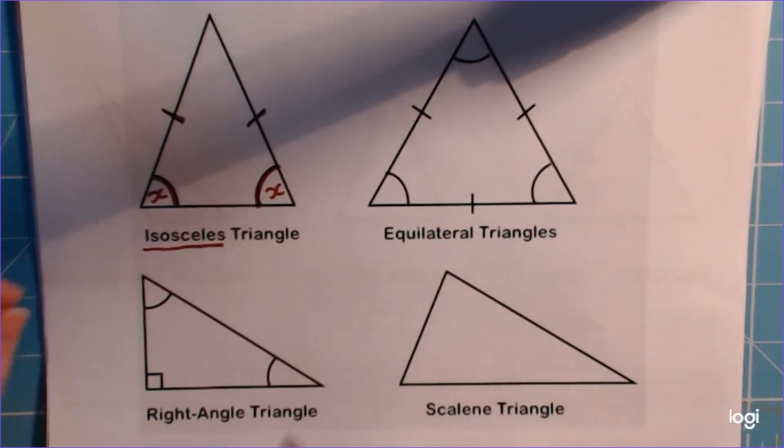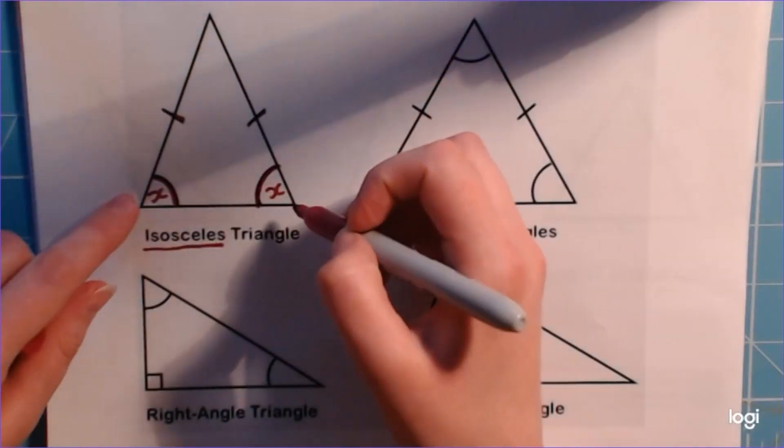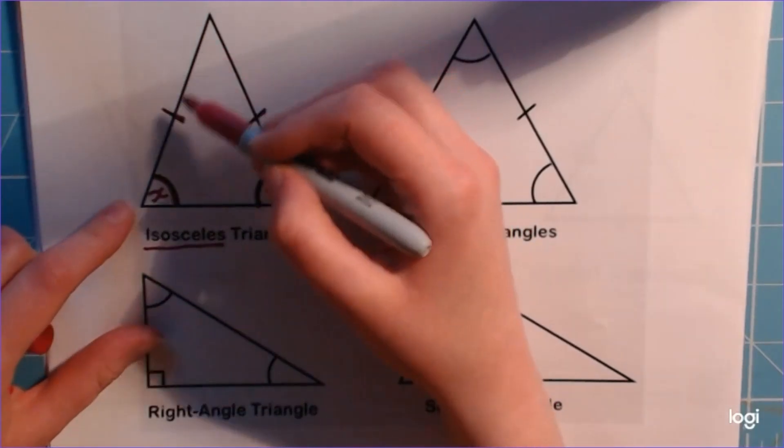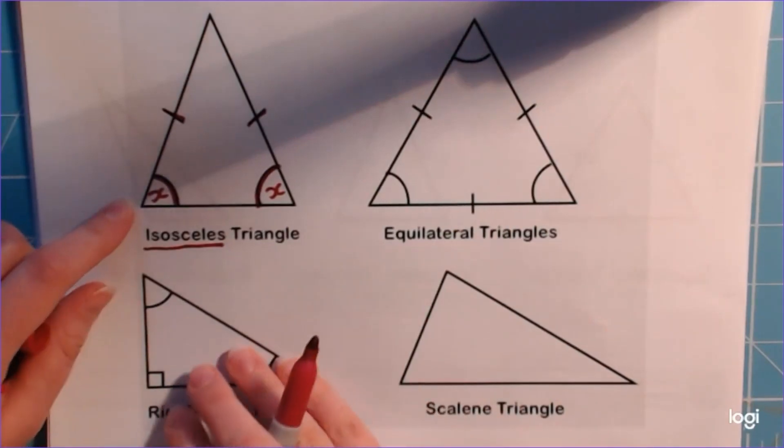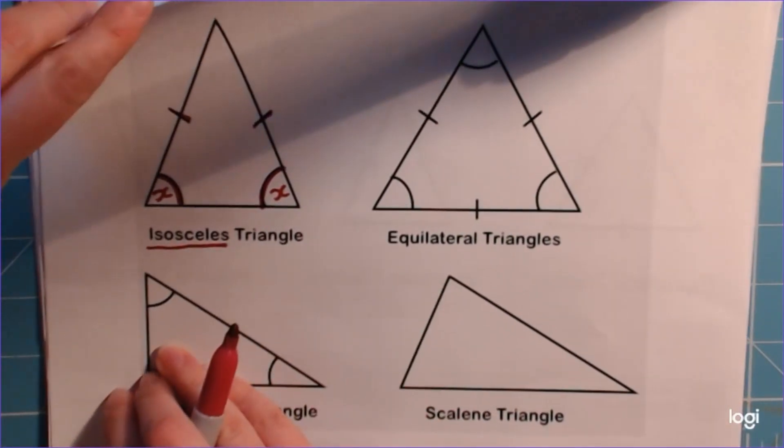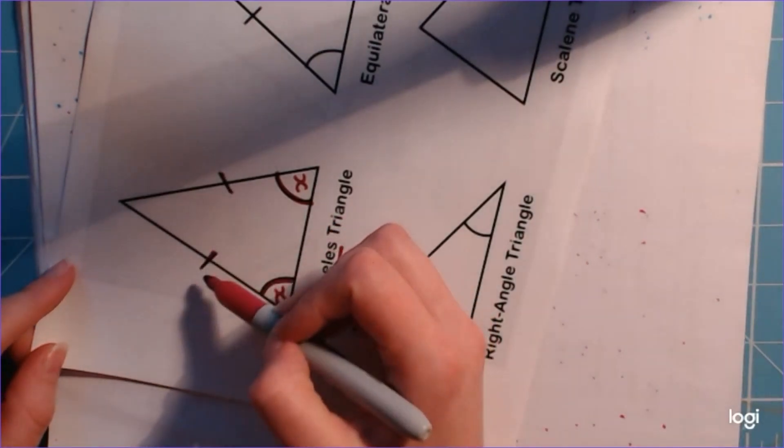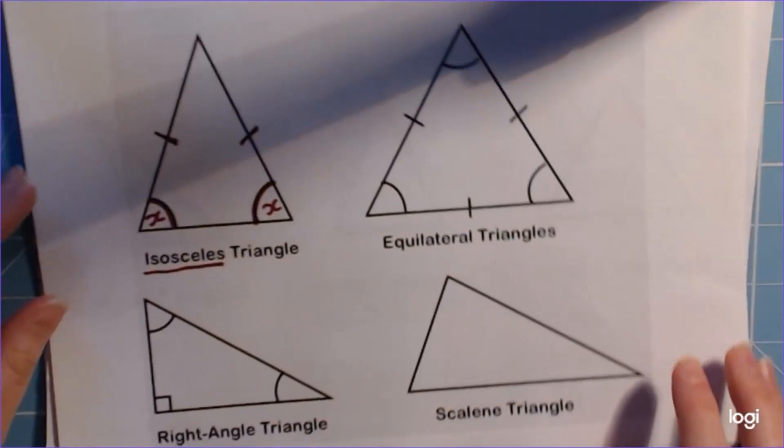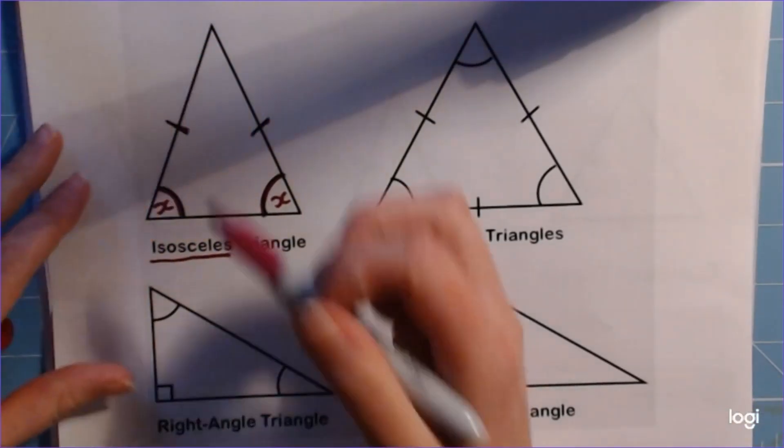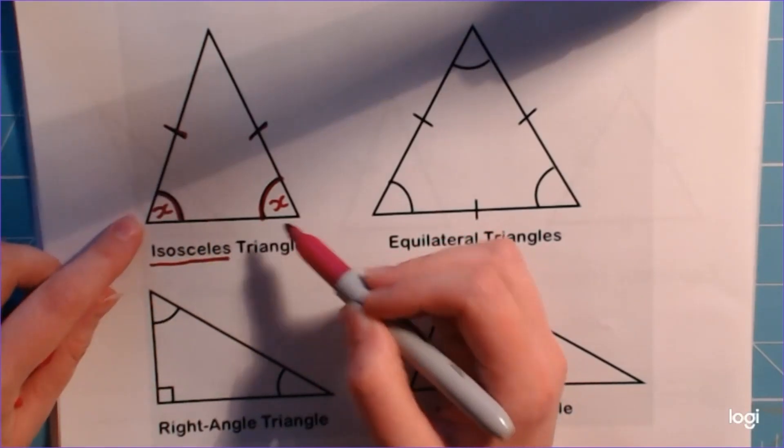Isosceles triangles have got two angles the same and two sides the same. Now don't be fooled because quite often we do see them looking like this, but sometimes you might be presented with it sideways or upside down. As long as there are two sides the same and two angles the same, it's an isosceles triangle regardless of which way up it is. Don't be fooled into thinking it's always this way up with the two equal angles at the base, because it's not always the case.